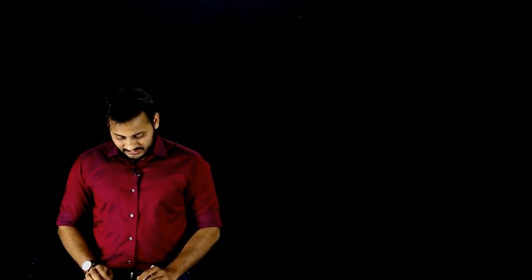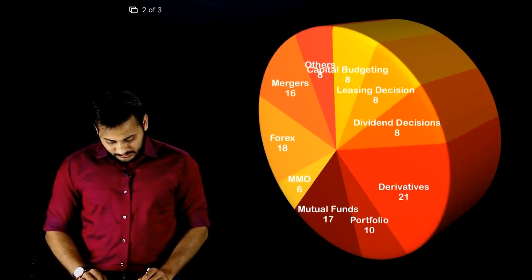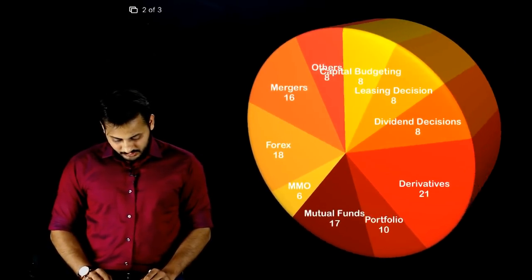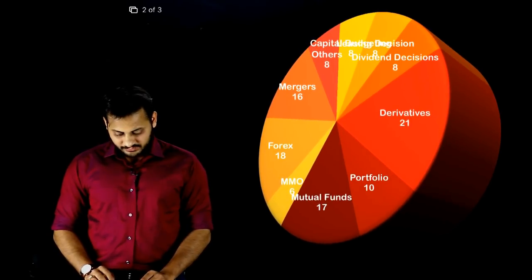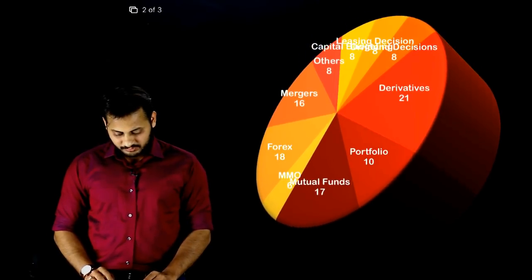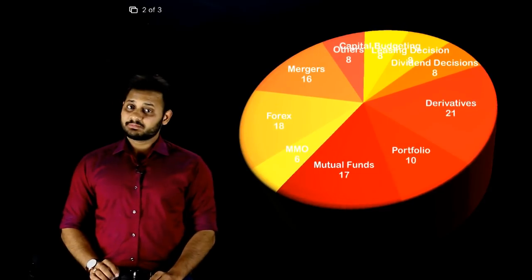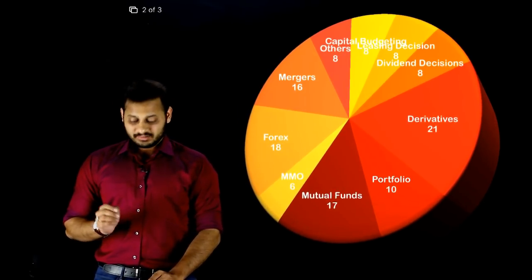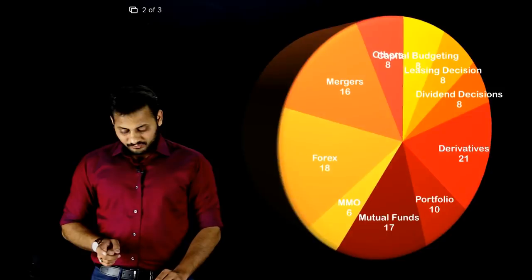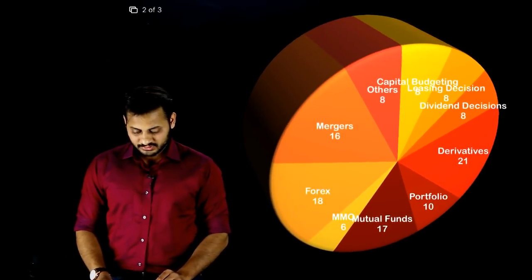So let's have a look. You can see here a whole chart. The most marks are in Derivatives — 21 marks. Portfolio has 10. Mutual Funds — this one is quite good — 17 marks, which is a surprising thing. Forex, as usual, 18 marks. And then Mergers, 16.